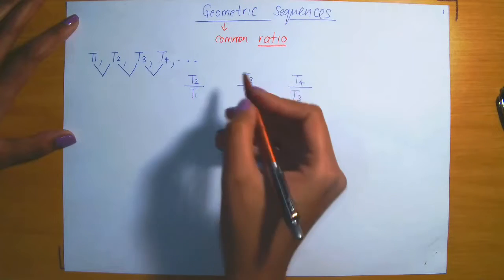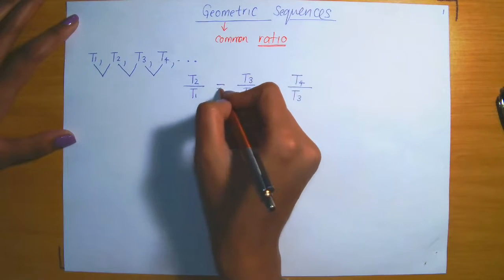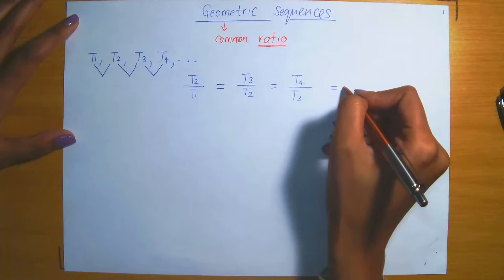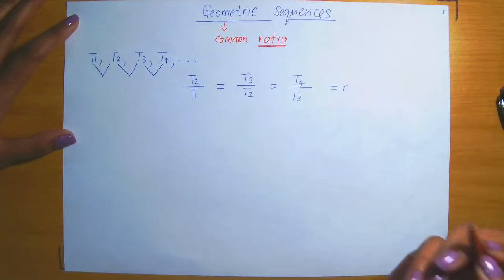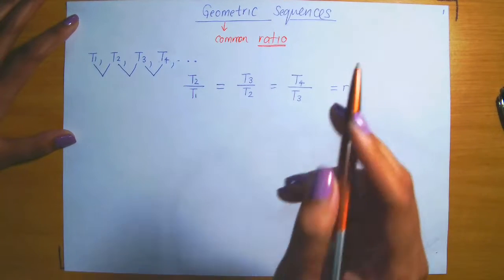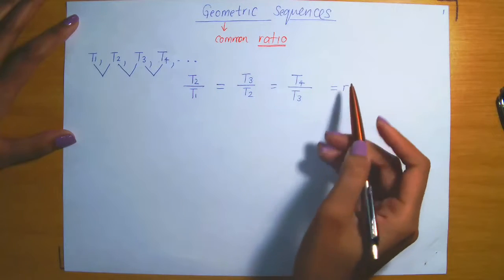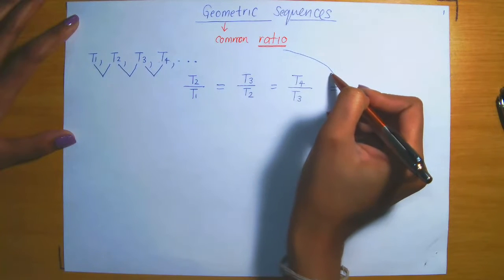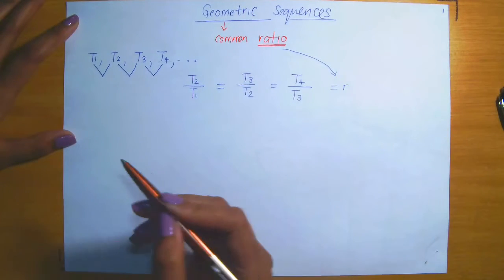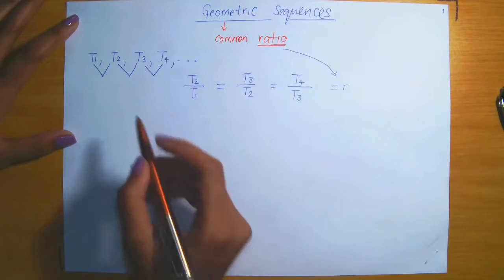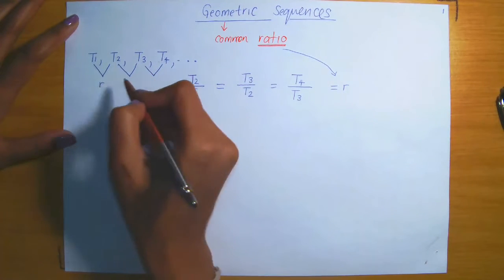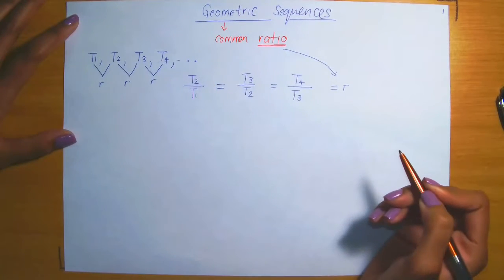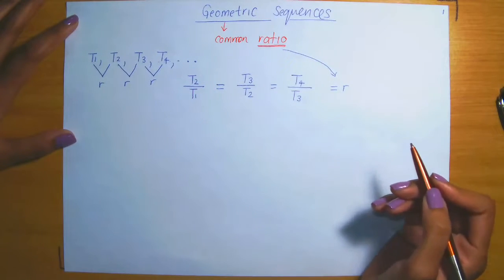When these ratios are all equal to one another — and let's say they're all equal to some number r — then we refer to this as a common ratio. So that's what we mean when we say a sequence has a common ratio r between consecutive terms.